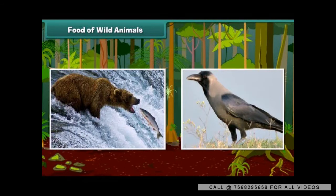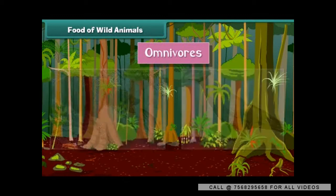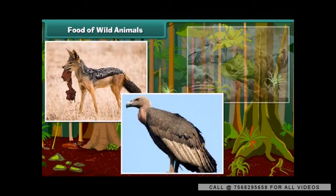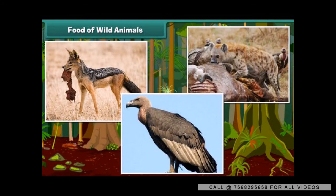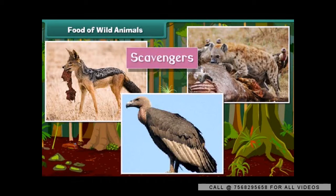Animals like bear and crow are called omnivorous animals, as they eat both plants and animals. Jackals, vultures, and hyenas are called scavengers — they eat the flesh of dead animals.